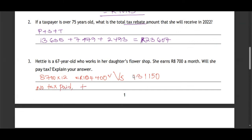The taxable income is below the threshold, so the person does not pay tax because their annual taxable income is below the threshold.